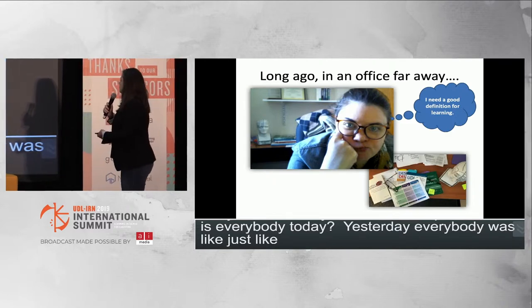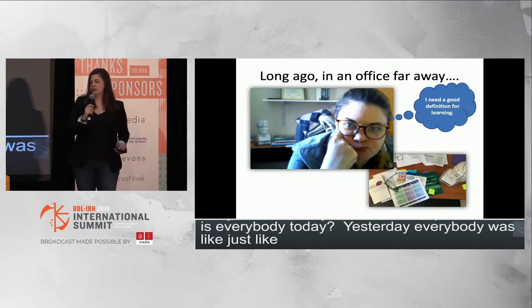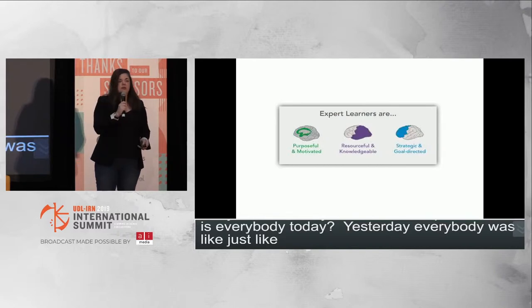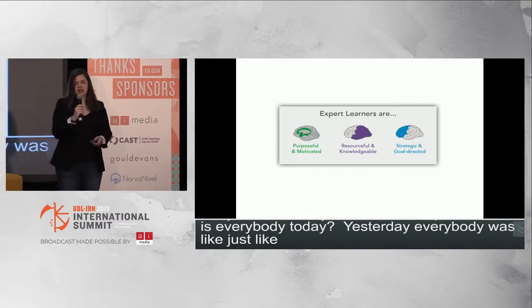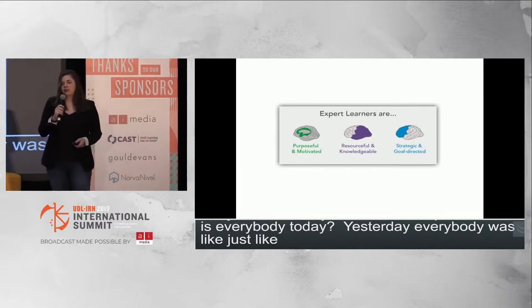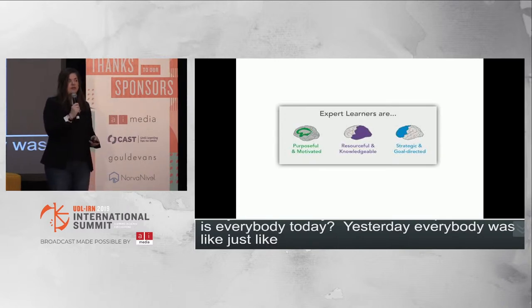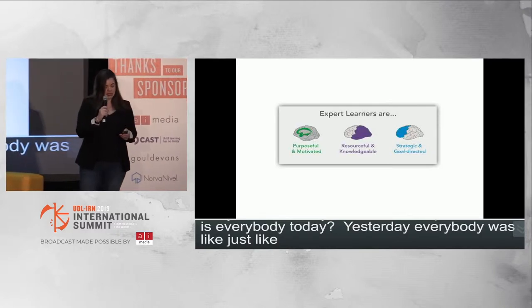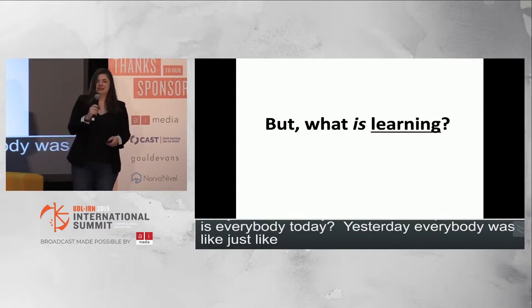So I went to all my UDL resources — Universal Design for Learning — and what I found was that we defined expert learning over and over again. An expert learner is purposeful and motivated, resourceful and knowledgeable, strategic and goal-directed. But what I couldn't find was what learning itself is. We forgot to define the learning part.